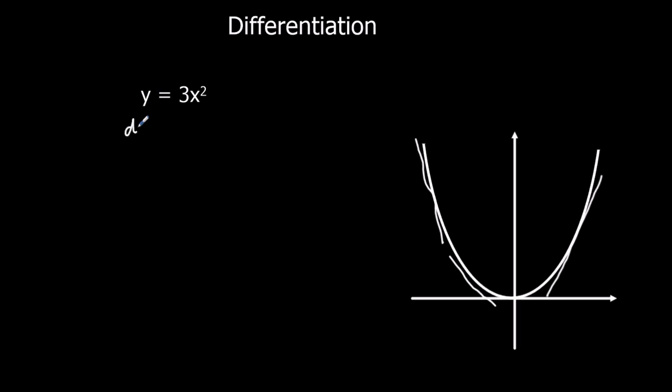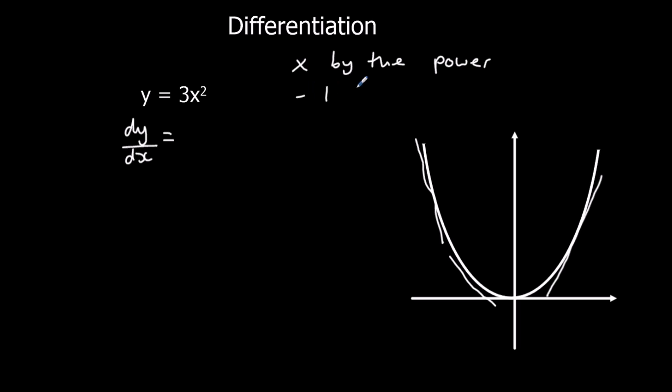So if y equals 3x squared, we're going to work out dy/dx. This is the notation that we use in differentiation. The gradient function — the function that tells us the gradient at a different point on the curve — is called dy/dx. There's a very simple process that we follow: we times by the power, and then take one off the power.